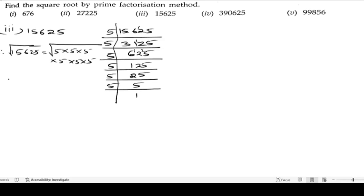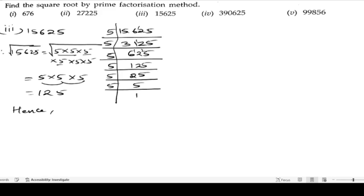When we take the square root, we get singles from pairs. For two 5s we get one single 5, so we get three 5s: 5 fives are 25, 25 fives are 125. Hence, the square root of 15625 is 125.